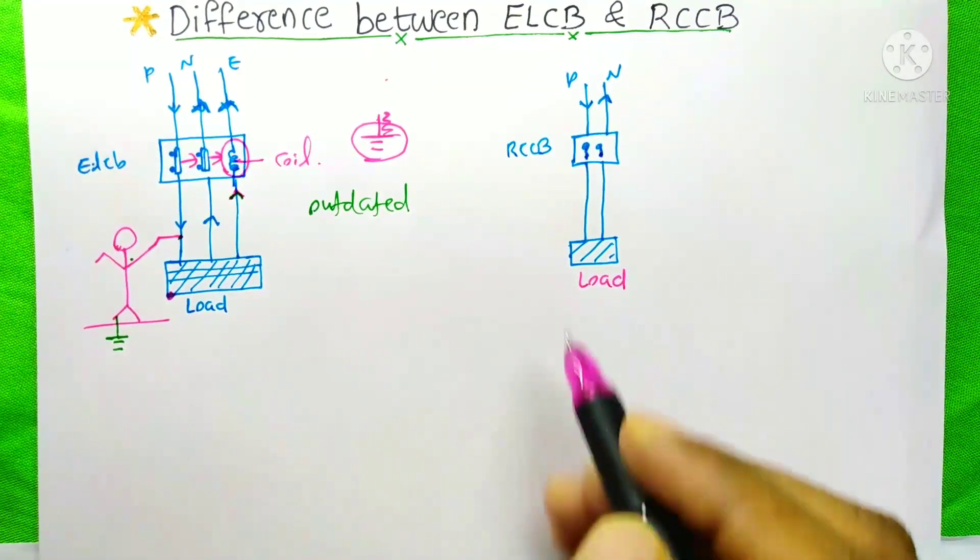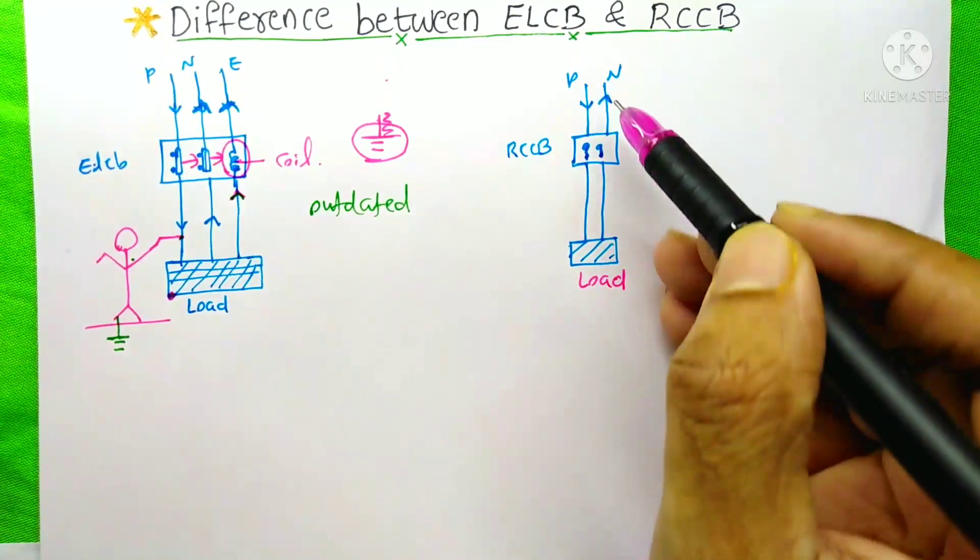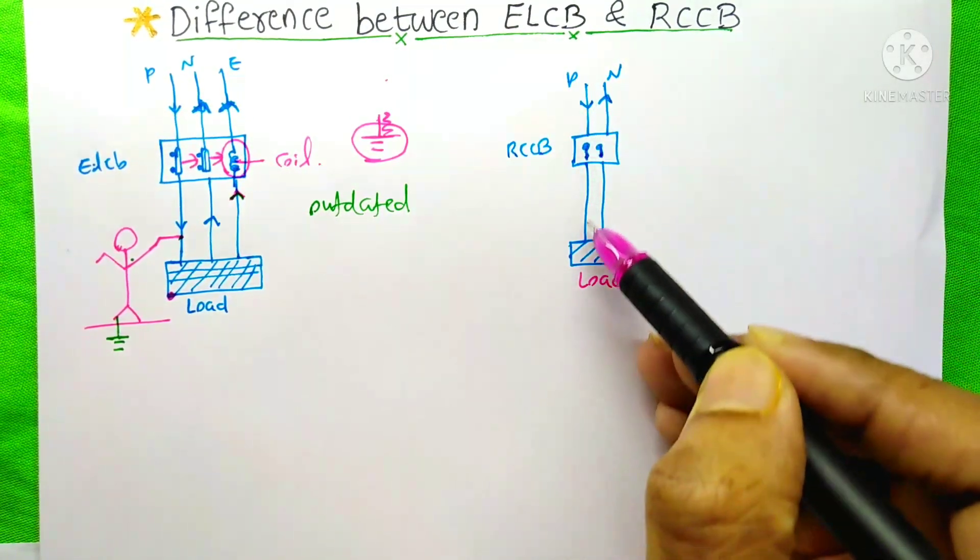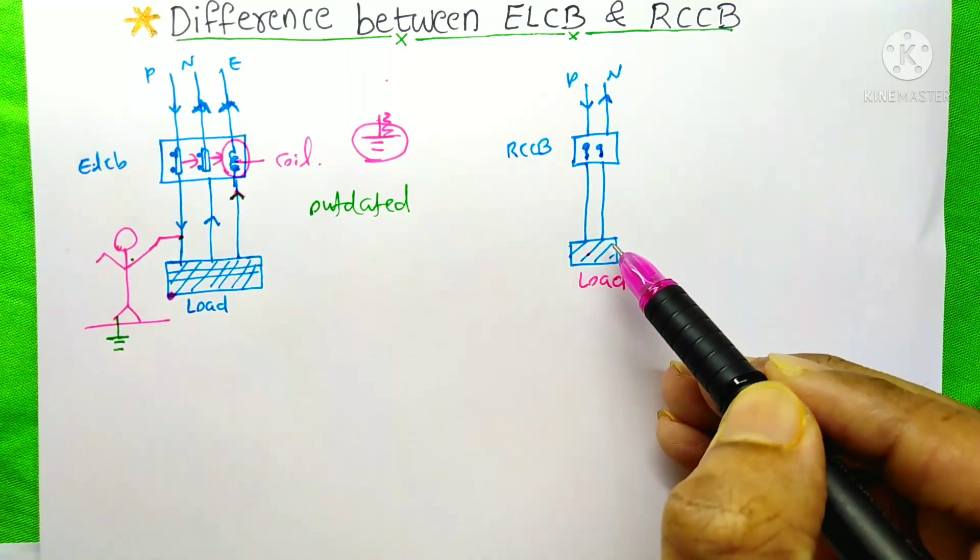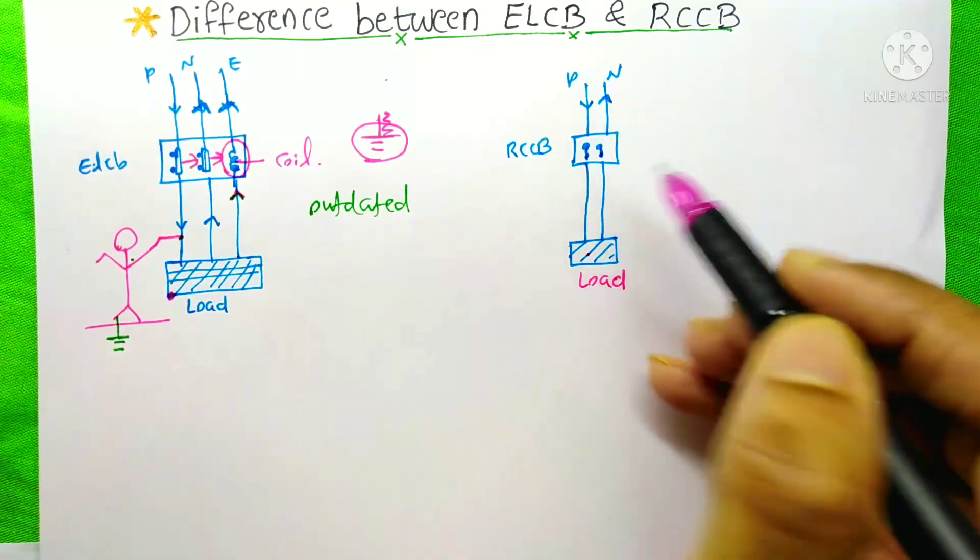Now I am going to tell you what is the importance of RCCB. When we switch on this load, the phase current will pass through this path, and the return current will go through the neutral. The phase current will be equal to the neutral current.